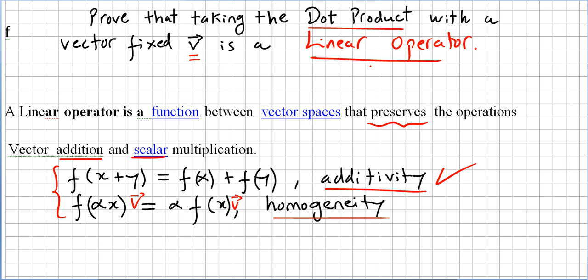This video is on the chapter of vectors in vector spaces. We are on the inner product, or dot product, and in the previous video we were asked to prove that taking the dot product with a fixed vector v is a linear operator.